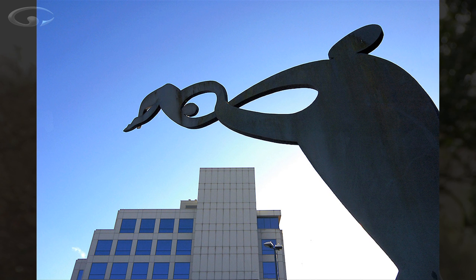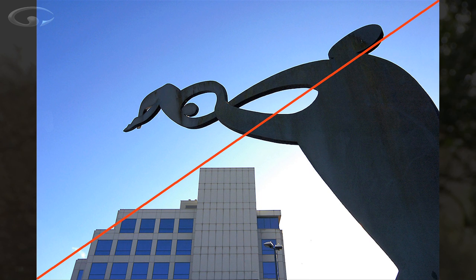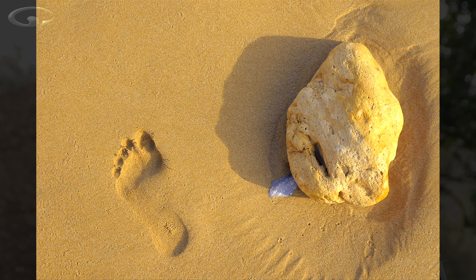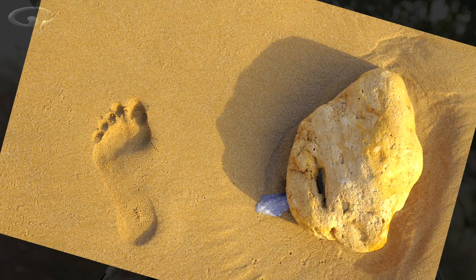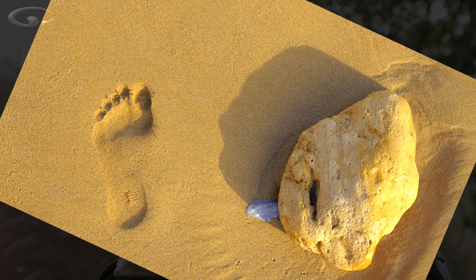I think it's pretty obvious there's an imaginary diagonal going on in this cityscape and another between Jane's footprint and the rock. If they were simply side by side they'd look really dreadful — kind of dull, boring, uninteresting. So much for the theory, let's go and put all this into practice.